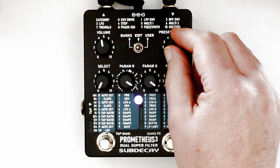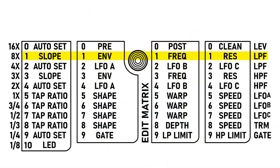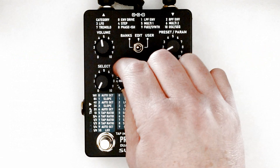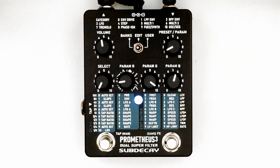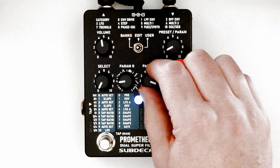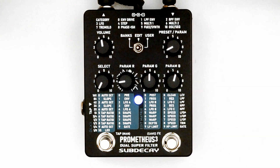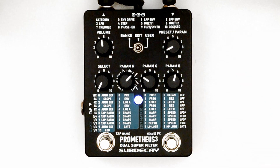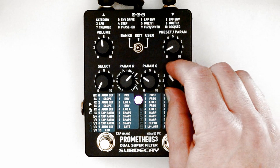Select row 1 for the low-pass filter. R controls the envelope depth. G controls the filter resting point. B controls the resonance.